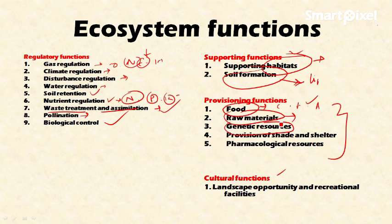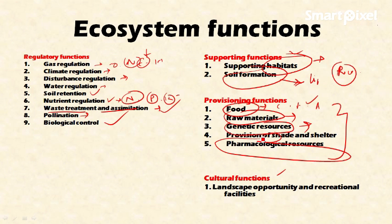The ecosystem provides raw materials for various industries from both terrestrial and aquatic ecosystems. It also provides genetic resources — what we eat today is largely obtained from the forest. For example, cereals like rice and wheat are wild varieties domesticated by humans. Genetic resources from wild plant varieties are needed to develop drought-resistant or pest-resistant varieties. The ecosystem also provides shade and shelter for organisms, and pharmacological resources — most drugs are derived from forest, ocean, or river organisms.